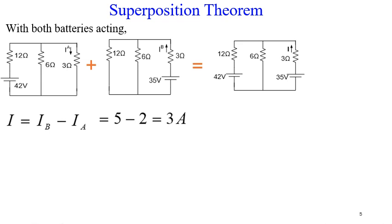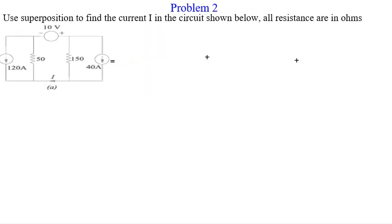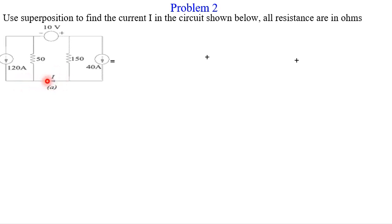Let us take our last example in this series. Using superposition, find the current I in the circuit shown below. All resistances are in ohms. The circuit has a 120-amp current source, a 10-volt voltage source, and a 40-amp current source. We need to find current I, and we apply superposition by taking each source acting alone.